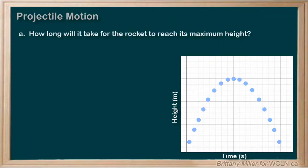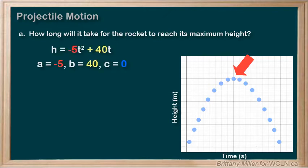So, the maximum height of the rocket is just going to be the maximum of our parabola located at the vertex. You know how to find that. Our equation is in standard form with a = -5, b = 40, and c = 0.